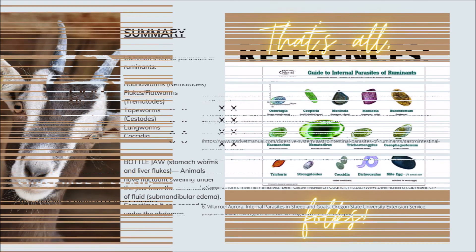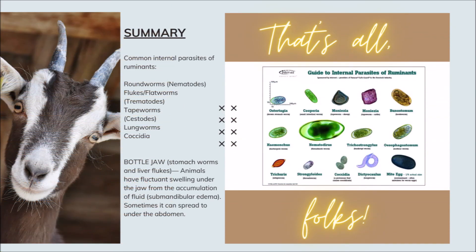In summary, the most common internal parasites of ruminants are: roundworms or nematodes, flukes or flatworms also called trematodes, tapeworms also called cestodes, lungworms, and coccidia. Internal worm infections usually cause bottle jaw, especially with stomach worms and liver flukes — a condition where animals have fluctuant swelling under the jaw from accumulation of fluid, also known as submandibular edema, which can sometimes spread to under the abdomen.